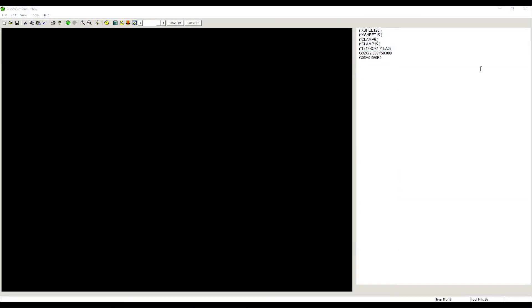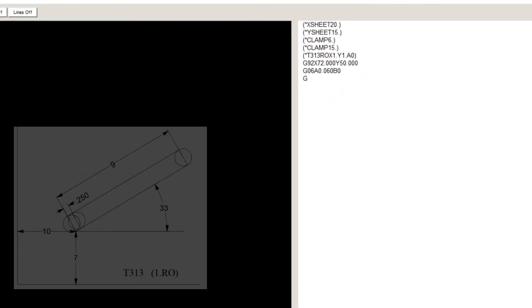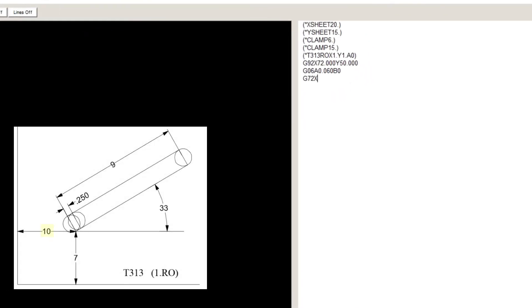Let's go to PunchSim and write a program. G72, X10, Y7, which is the starting point of the line. G69, I9, which is the length of the line. G31, J33, which is the angle of the line. P1, which is the diameter of the tool used.